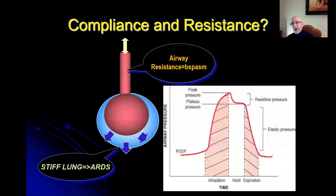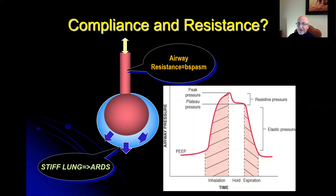Let's discuss lung pathology first. The patient may be intubated for COPD or asthma, where bronchospasm causes airway resistance. Alternatively, patients with pneumonia or influenza may have non-compliant, stiff lungs — that is ARDS, which will be covered in a later talk. To determine which lung pathology we're dealing with, check the plateau pressure. Peak pressure is measured at the top of inspiration; when you hold the patient in inspiration, you measure the plateau pressure. If plateau pressure is elevated, you're dealing with a non-compliant, stiff lung. If plateau pressure is much lower, you're dealing with bronchospasm.